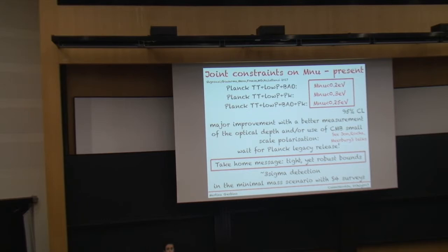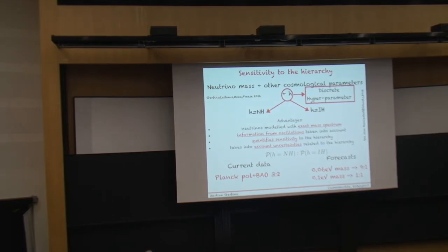Since we are getting so good at constraining neutrino masses, we can ask if we can go beyond this, if we can constrain even other properties of massive neutrinos. What can we say about the hierarchy with cosmology, for example? So we tried this exercise and we proposed this model for assessing the sensitivity of cosmological probes to the hierarchy. Simply when we sample our parameter space composed by the standard cosmological parameters plus the sum of the neutrino masses, we introduced this additional discrete parameter.